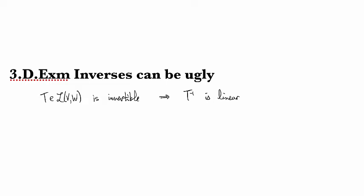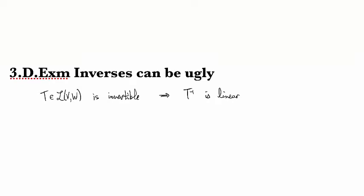I want to revisit this proposition from the very beginning of this section: if you have an invertible linear map T ∈ L(W), then the inverse T⁻¹ is automatically linear as well.